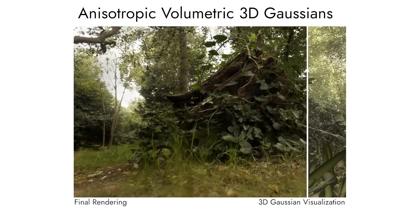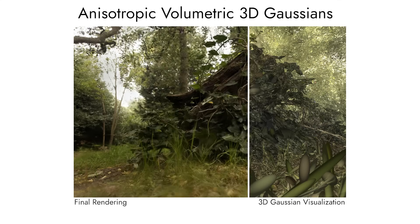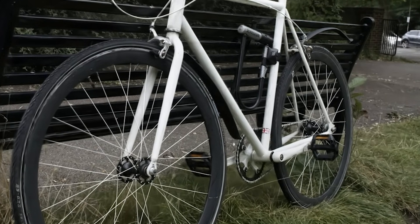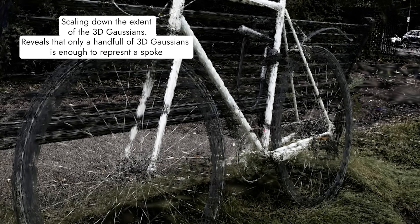After the optimization, the 3D Gaussians often take on extreme anisotropic properties to represent very high-frequency geometry like vegetation. Gaussians are a compact and fast representation. In this example, we scale down their extent so we can see that the spokes of the bicycle can be represented with just a handful of Gaussians.